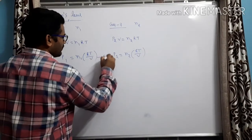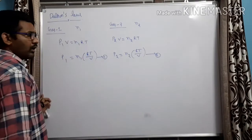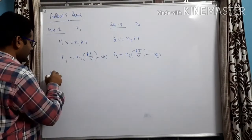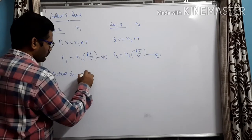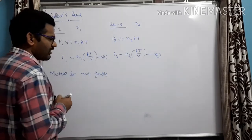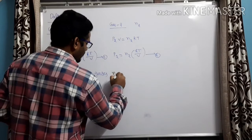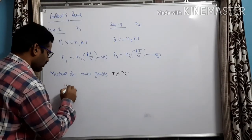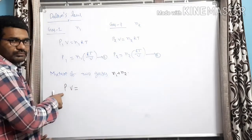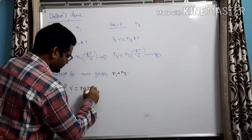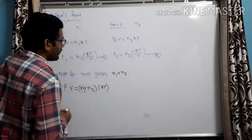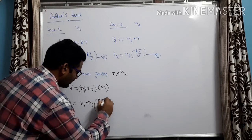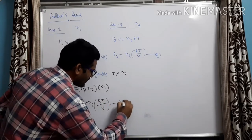Let us call these equation 1 and equation 2. Now I am taking the two gases together in a container. The mixture of two gases has a total number of moles of N₁ + N₂. Applying the ideal gas equation to the mixture: PV = (N₁ + N₂)RT, which gives P = (N₁ + N₂)RT/V. Let us call this equation 3.